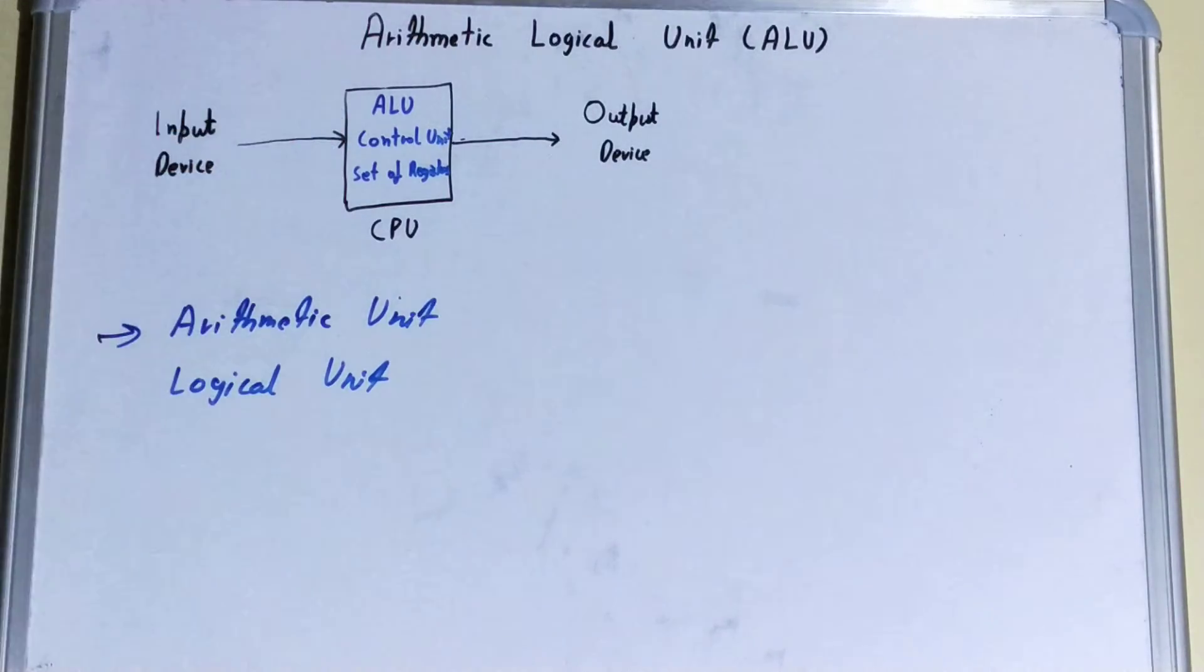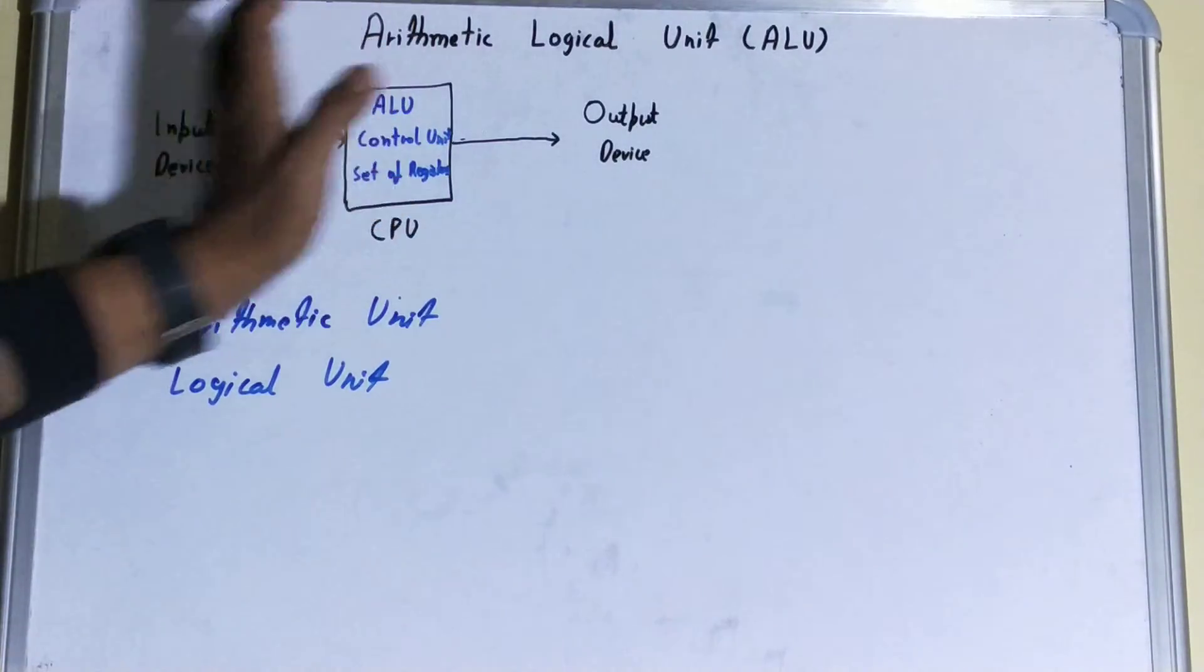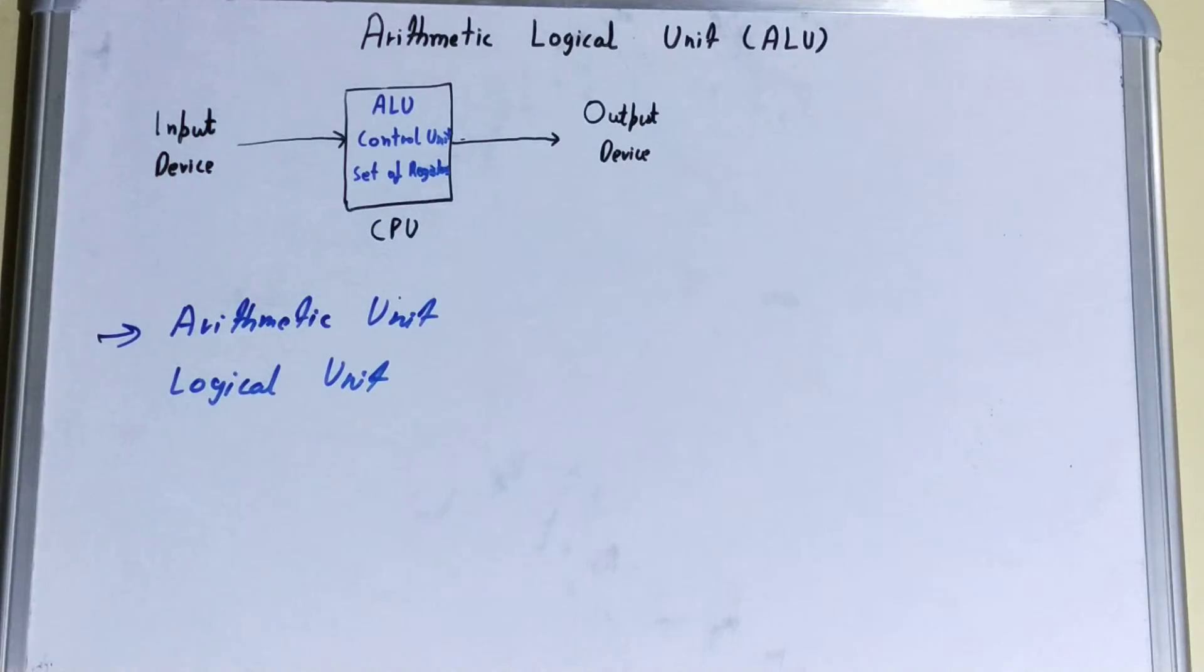The ALU does the original tasks for the CPU, and then when it gets the output it shows the output at the output device. Now let's talk about the two units of your ALU.